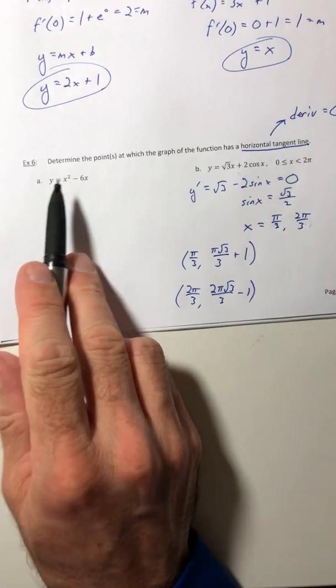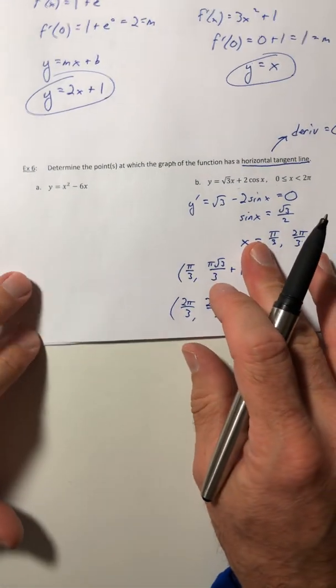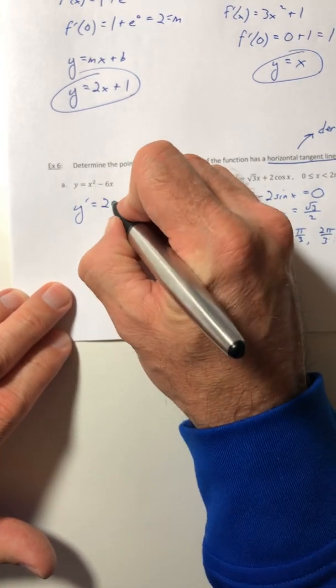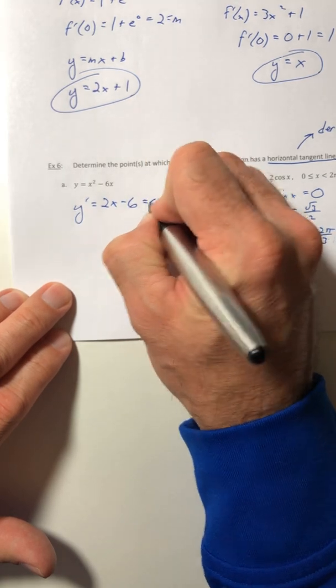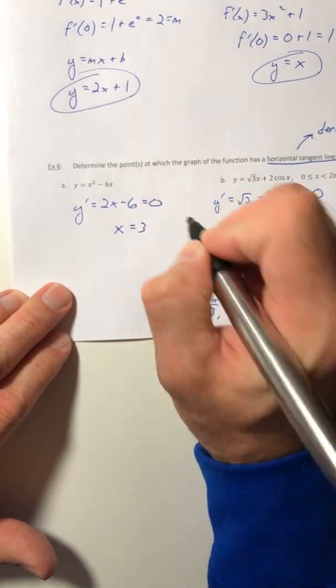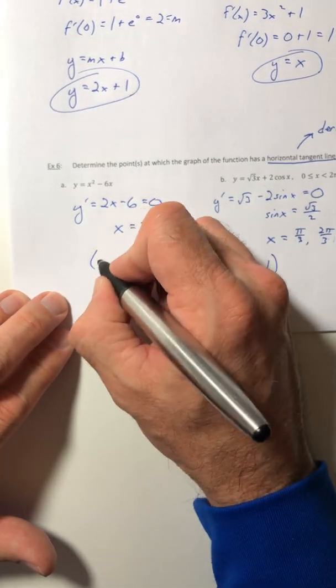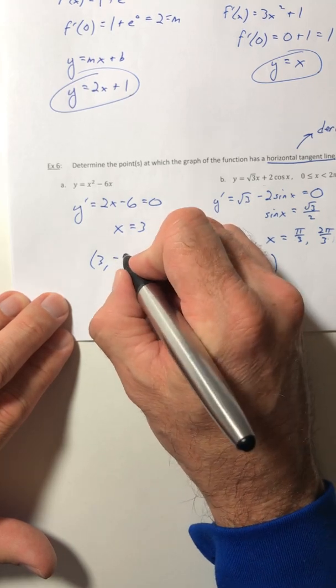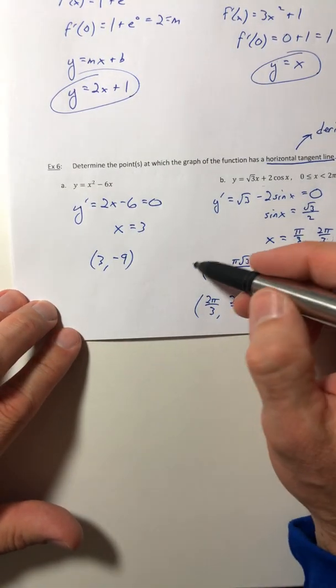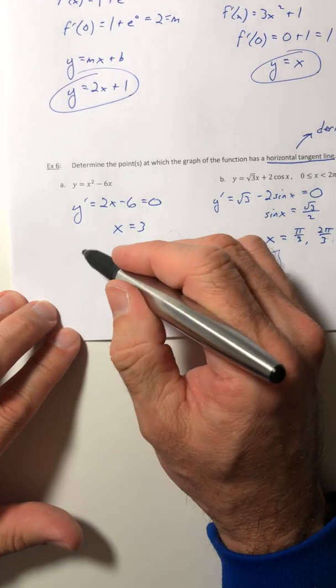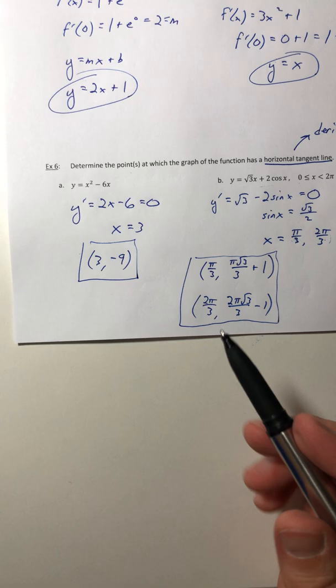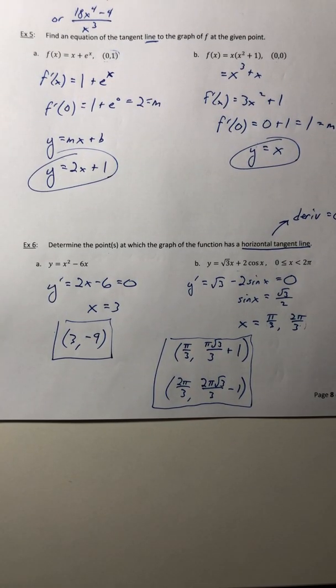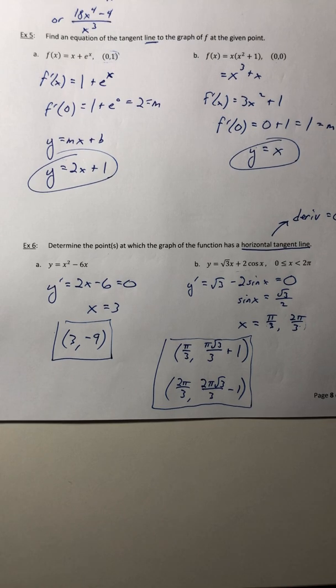Okay, so part a you would do the same thing. Actually let's just do it then. This one will be fast. Take the derivative, set it equal to zero, and x comes out to equal 3. So then take it, plug it back into the original equation, and y equals negative 9. So sometimes you get more than one point, sometimes you only get one, and sometimes you might not get any. It might not have a horizontal tangent, just depends on the function. All right, let's go ahead and stop here and we'll continue in the next one.